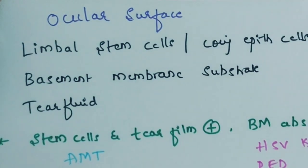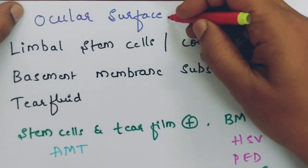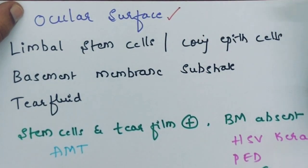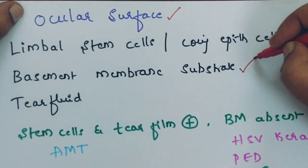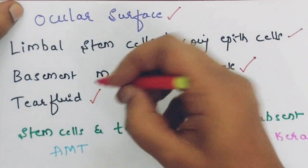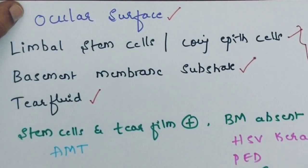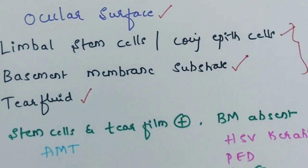Now moving on to the different situations where we need amniotic membrane transplantation. First, let us understand the ocular surface and its important components: good limbal stem cells or conjunctival epithelial cells, a basement membrane substrate, and tear fluid. All three are important to maintain the ocular surface — deficiency of any one will affect the ocular surface.